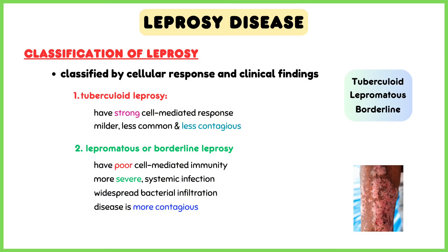Leprosy is also classified by cellular response and clinical findings, such as tuberculoid, lepromatous, and borderline leprosy. People with tuberculoid leprosy typically have a strong cell-mediated response, which limits disease to a few skin lesions, and the disease is milder, less common, and less contagious. People with lepromatous or borderline leprosy typically have poor cell-mediated immunity to Mycobacterium leprae and have more severe, systemic infection with widespread bacterial infiltration of skin, nerves, and other organs. They have more skin lesions, and the disease is more contagious.